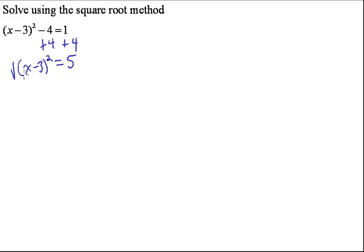Now that we have that isolated, we can take the square root of both sides. And remember, any time you take the square root, you've got to put your plus or minus sign in. So you have x minus 3 equals plus or minus the square root of 5.